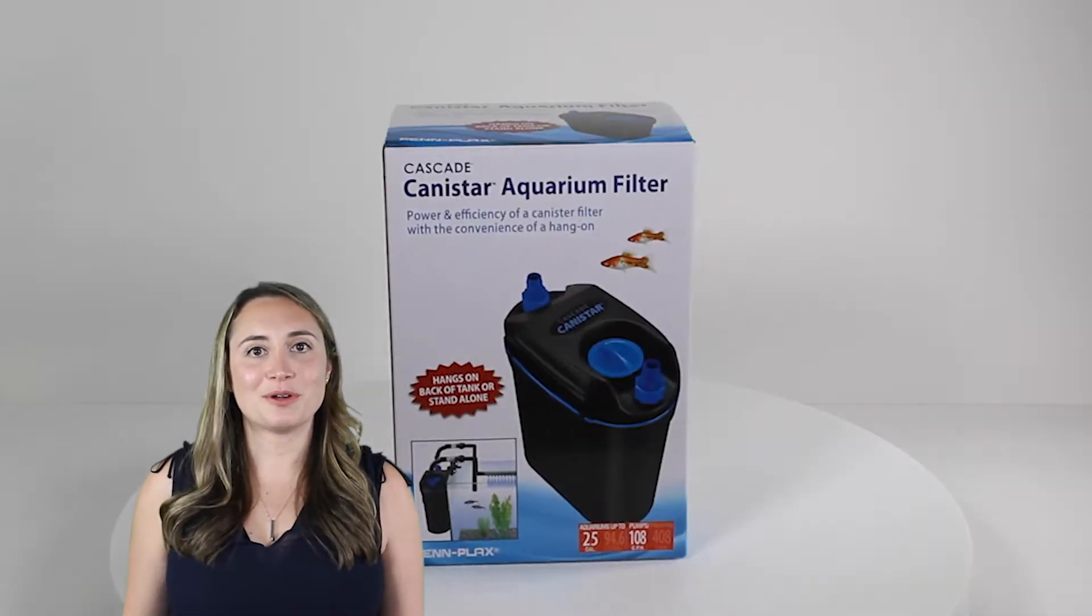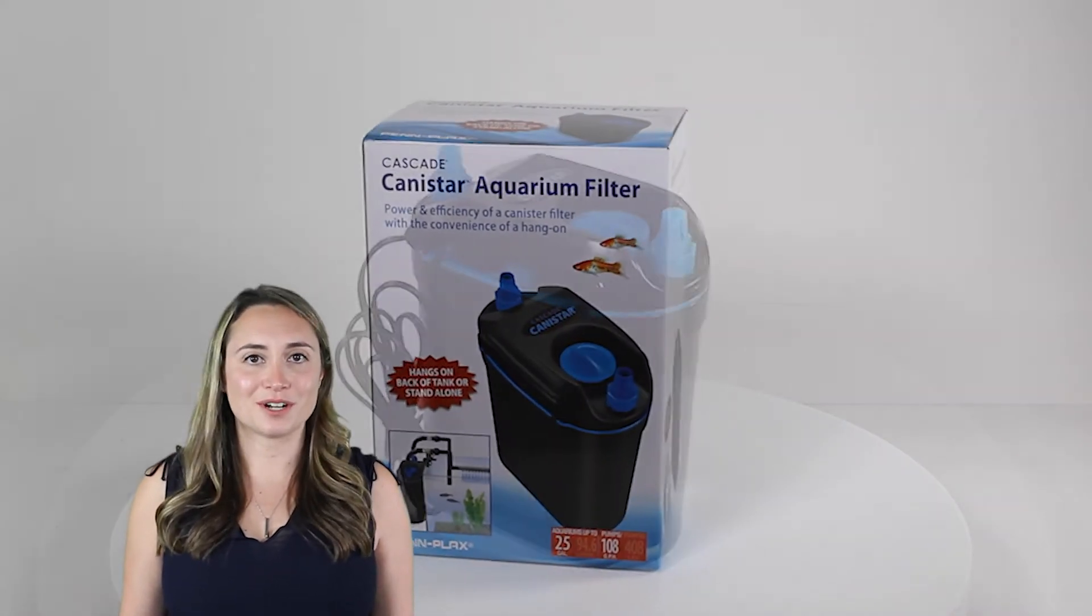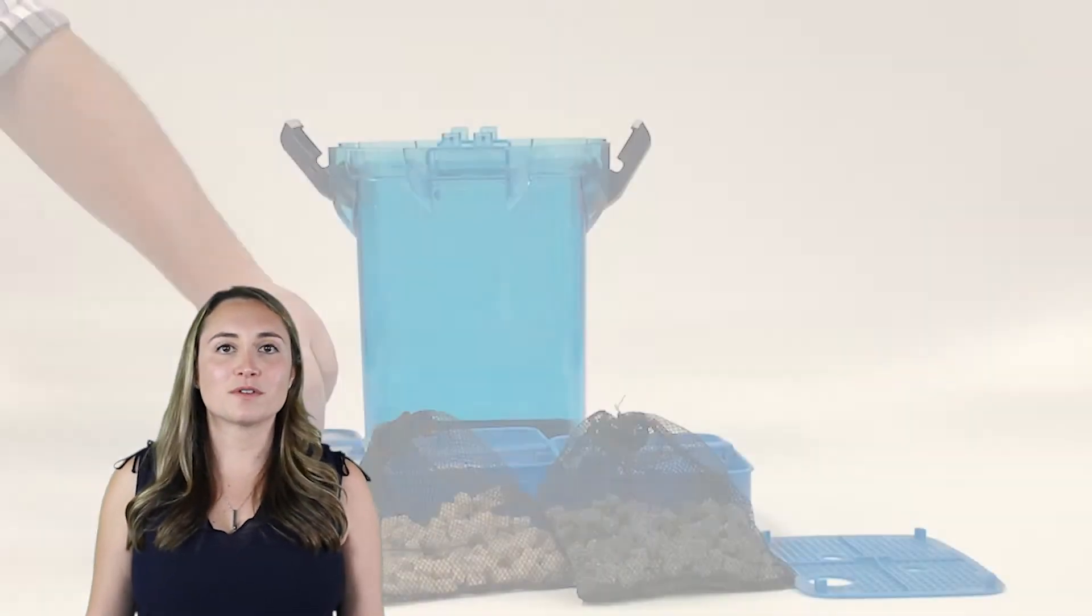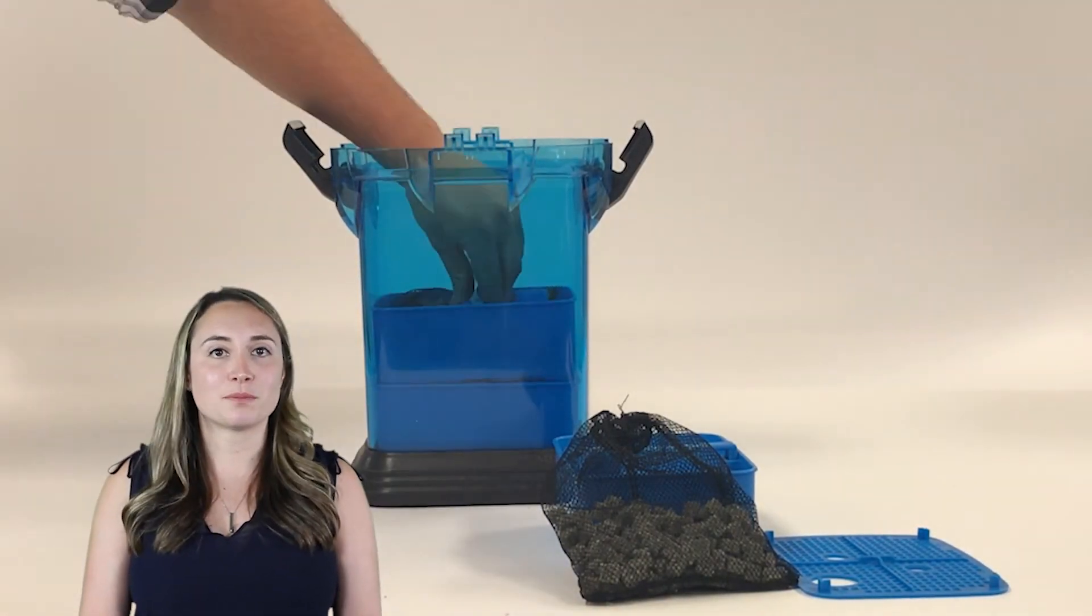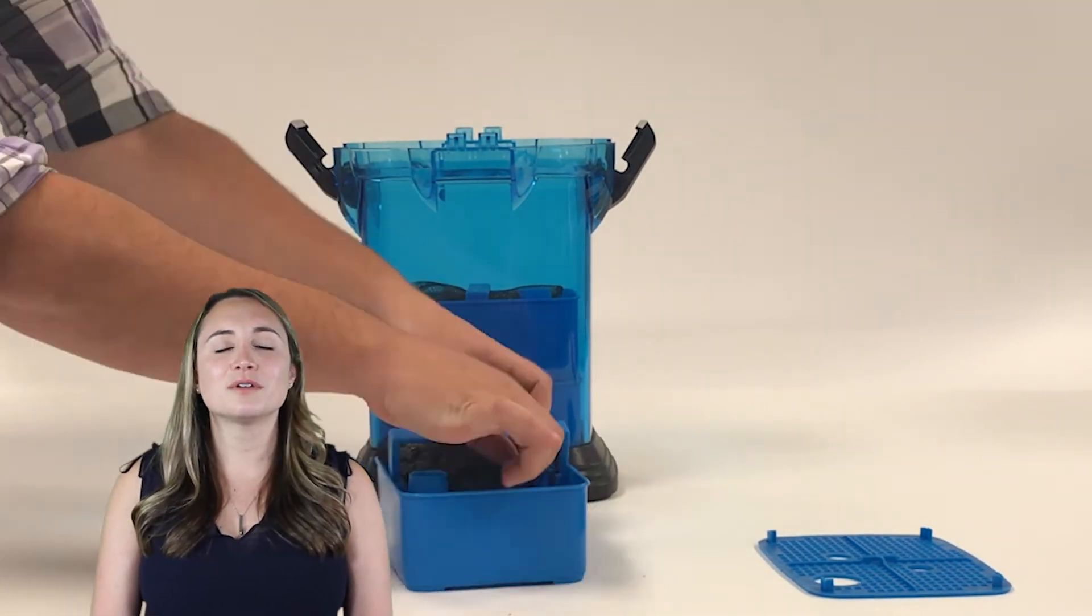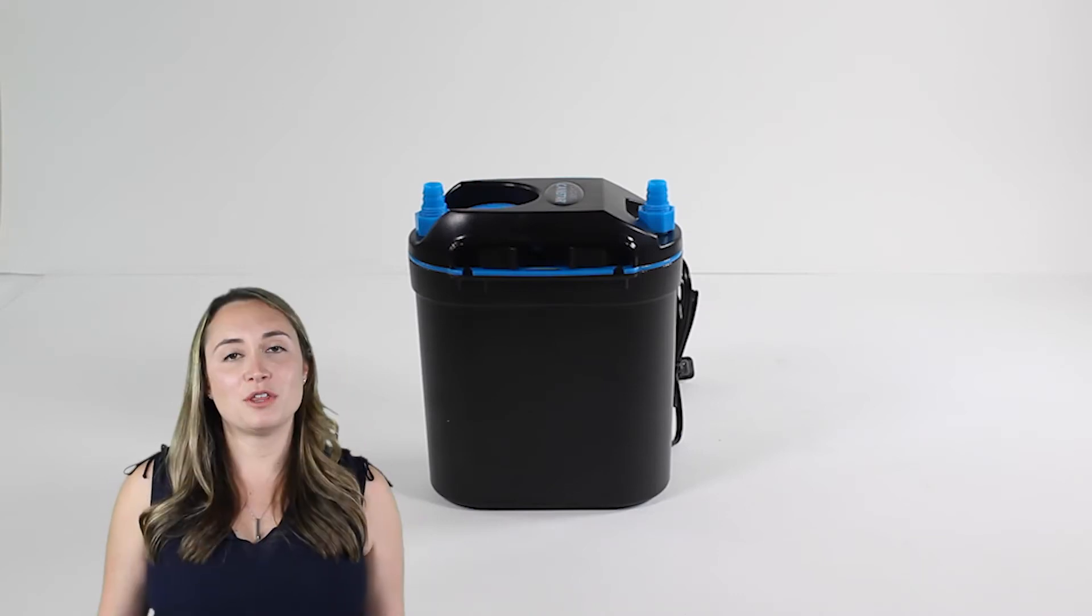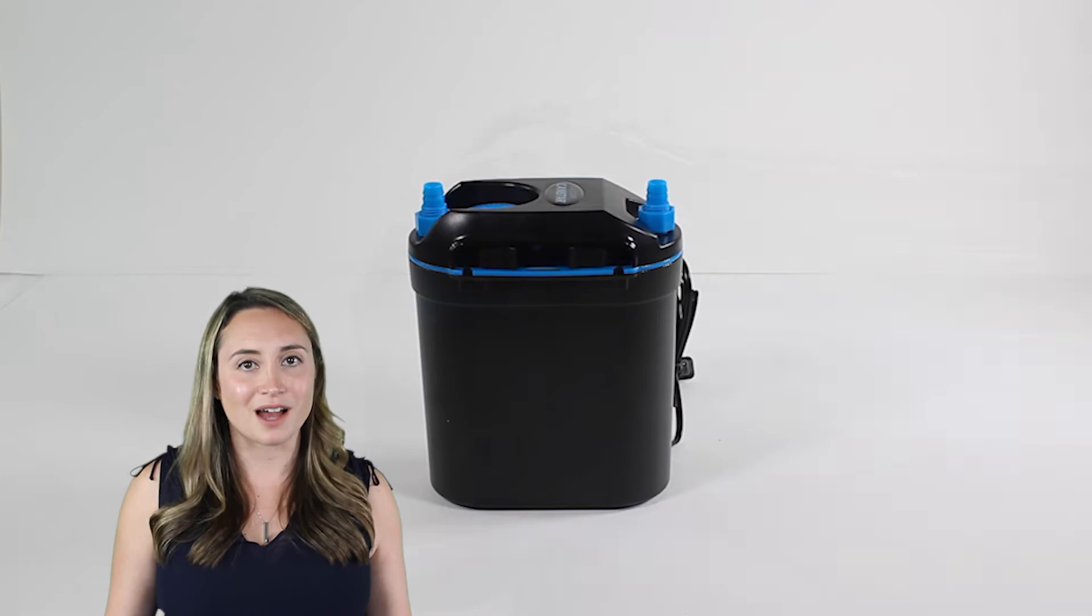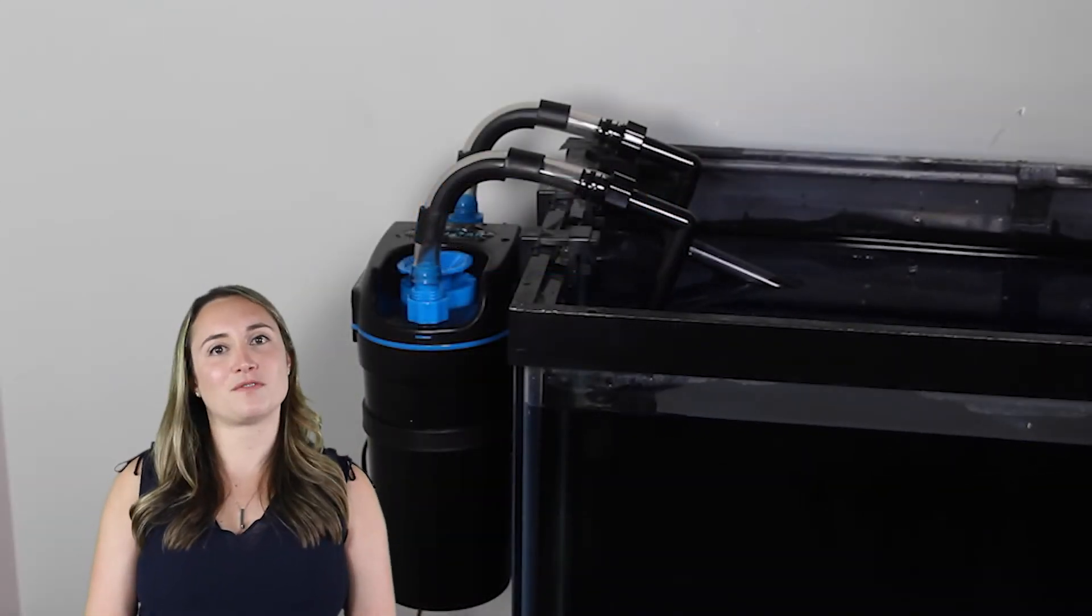The next item I'm going to show you is a hybrid between a hang-on filter and a canister filter, and we call it the Canistar. Canister filters offer so many different levels of filtration and opportunities for bacteria to colonize that it really just creates the most optimal system for filtering your tanks. This filter can either hang on the side of a tank or it can be placed below or beside the tank. Now this filter operates just like a canister filter does. The water goes in and it's going to go through three different levels of filtration.